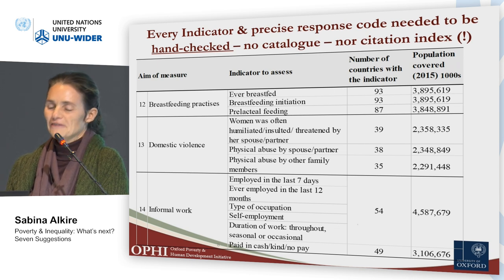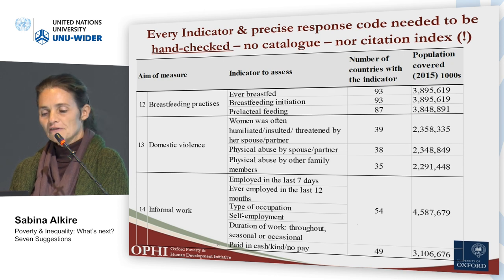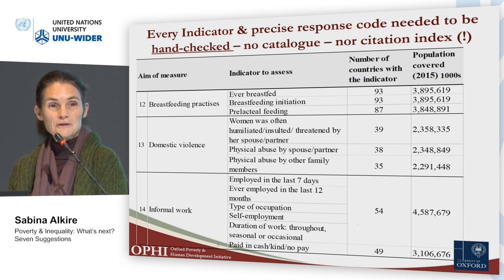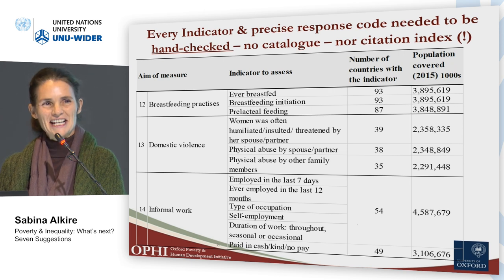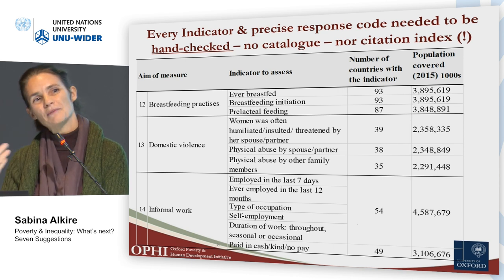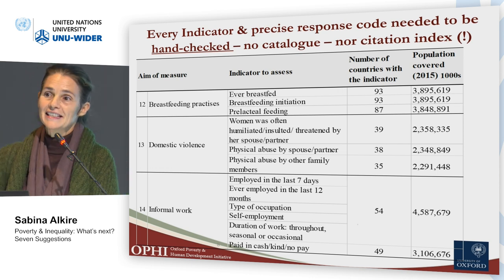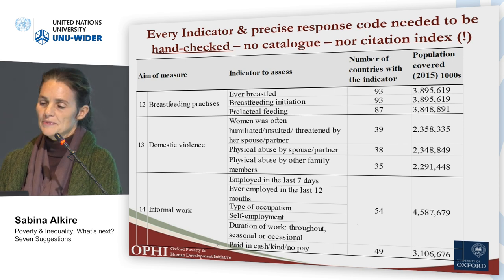We found that 54 countries home to 4.6 billion people have data on whether a woman has worked in the past week or year, in self-employed type applications, but not whether she is in the labor force — so we also couldn't use this. There's a need for a citation index of survey questions: which questions are actually used by the research and policy communities, so unused questions that waste time could perhaps be discontinued.